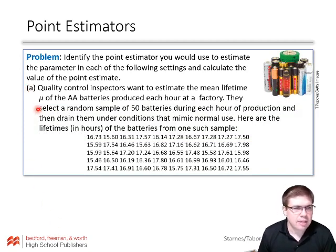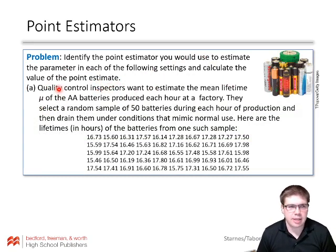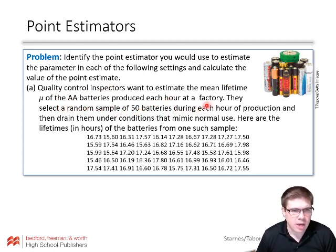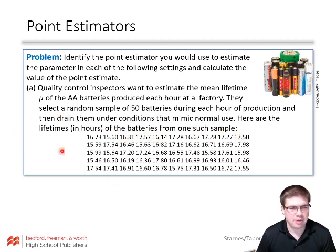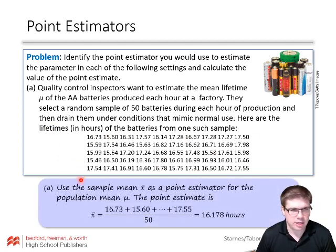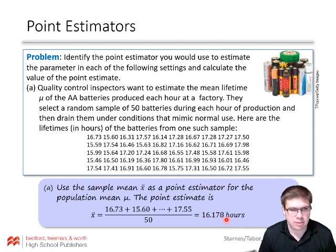For example, identify the point estimator you would use to estimate the parameter in each of the following settings and calculate the value of the point estimate. Quality control inspectors want to estimate the mean lifetime mu of AA batteries produced each hour at the factory. They select a random sample of 50 batteries and drain them under conditions that mimic normal use. Here are the lifetimes in hours from one such sample — it's a wall of data. So our point estimate is the sample mean. We add up those 50 numbers, divide by 50, and we get an average of 16.178. That's our point estimator for the population mean mu.